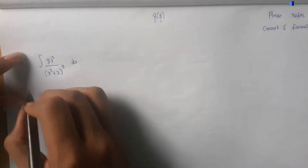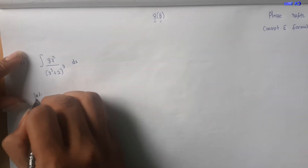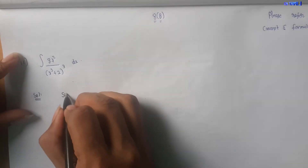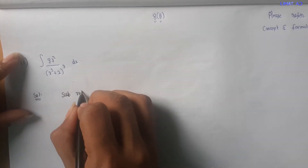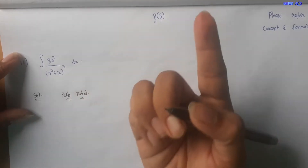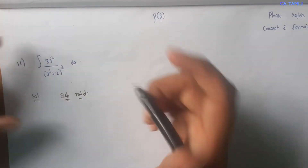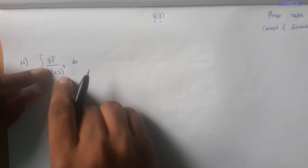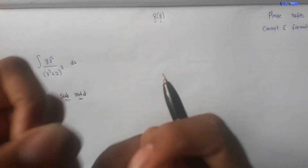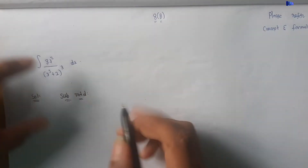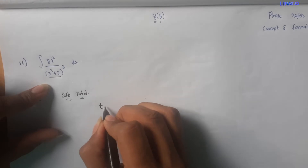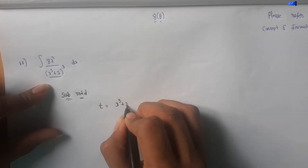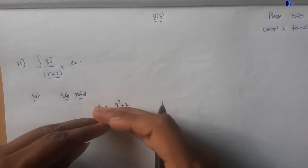So this is the solution. How do we solve this? We use the substitution method. Let t equal to x³ plus 2. So if we solve using this method, the first step is substitution.